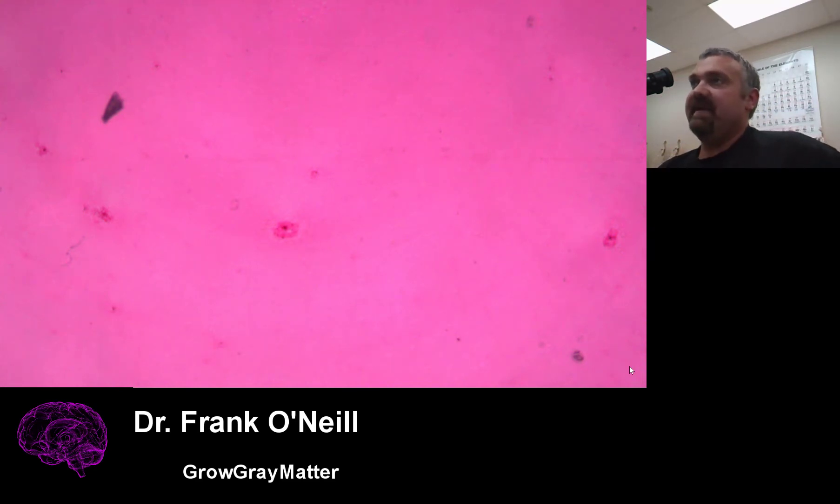A capsule stain is an example of a negative stain, where you can't actually stain the structure you're trying to see. You stain everything else, you stain the background. The capsule is a structure that bacteria can have that greatly increases their virulence, which means it makes them much more dangerous and potentially much more pathogenic.